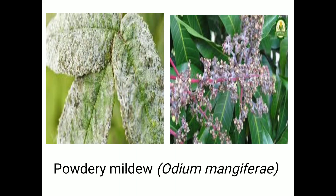Pink disease is caused by Botryobasidium salmonicolor. It is characterized by a pinkish powdery coating on twigs and branches. The fungus then attacks the bark and enters inside the internal tissues, interfering with nutrient transfer. When fungal growth spreads and girdles the stem, shredding of the bark takes place. Later the leaves turn yellow and dry. The pink color on the tissue represents conidia formation by the fungus, hence the name pink disease.